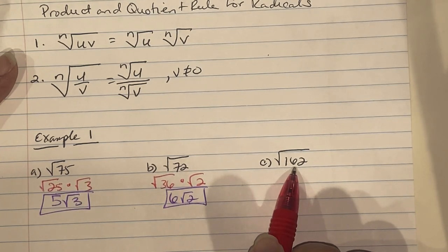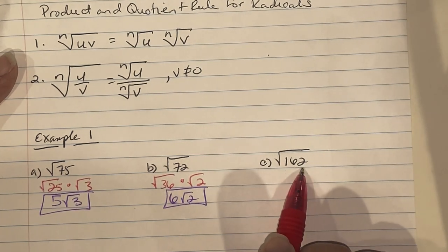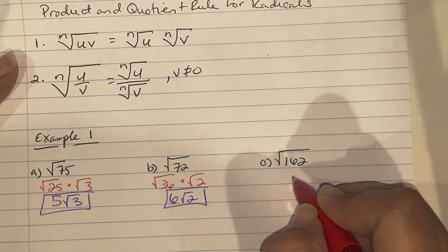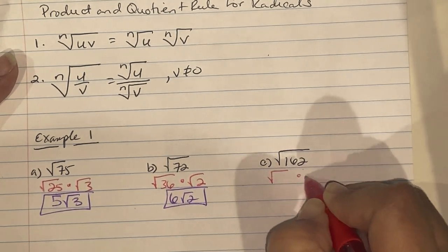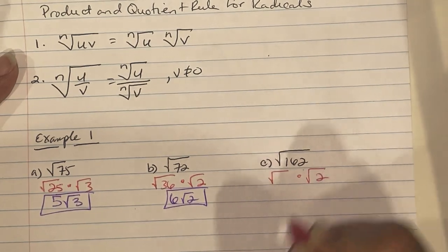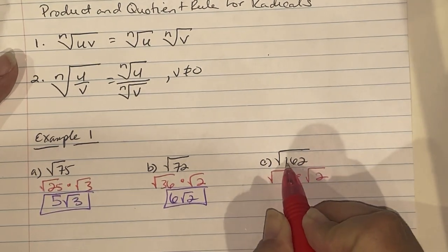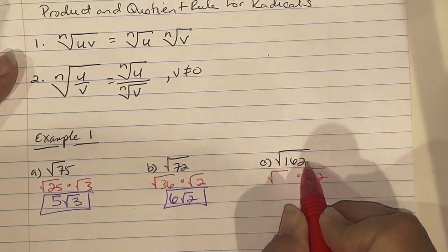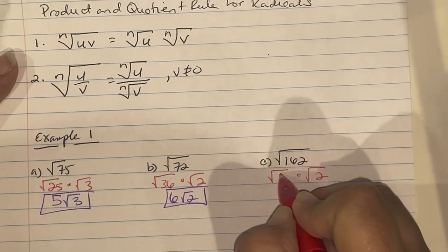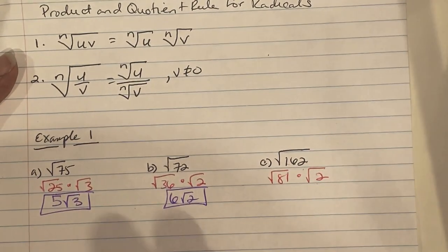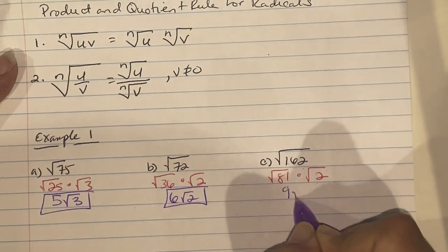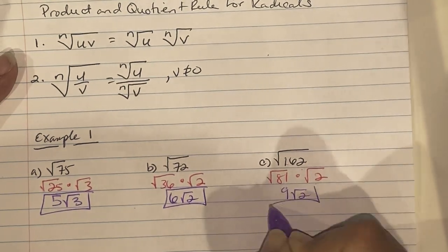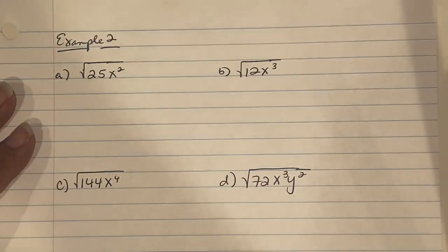For √162, it's also even, so divide by 2: 162 ÷ 2 = 81. We know √81 = 9, so √162 = 9√2.